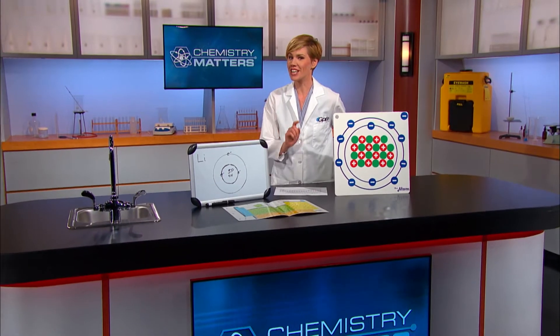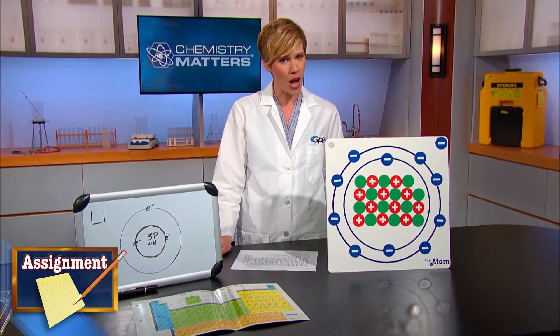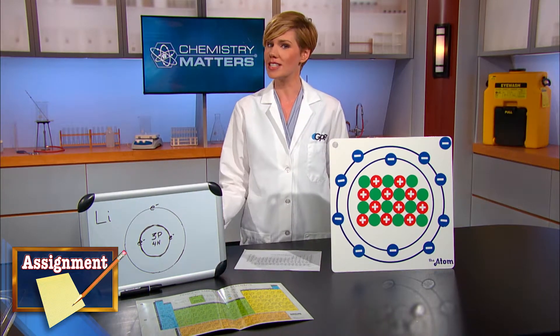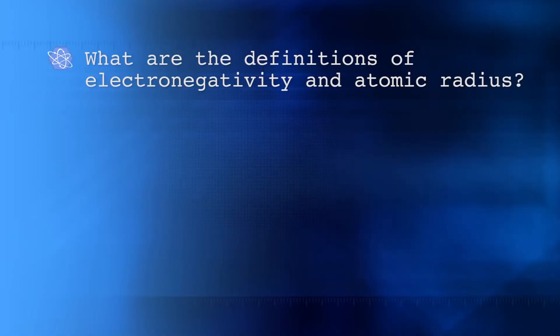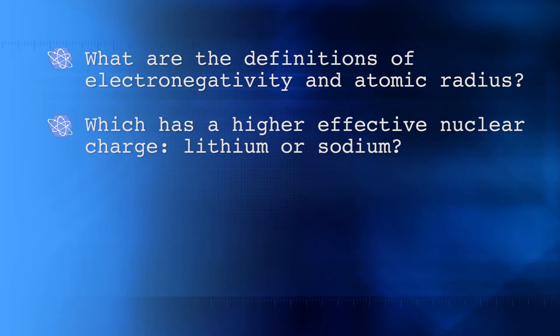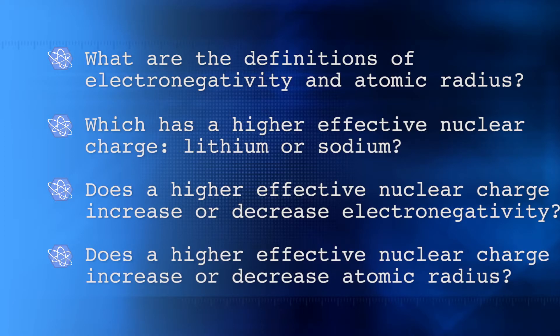Now's your chance to practice applying your new knowledge. Use the Bohr models of lithium and sodium and what you've learned about effective nuclear charge to predict whether electronegativity and atomic radius increase or decrease when moving from top to bottom down a group on the periodic table. The following questions should help guide your predictions: What are the definitions of electronegativity and atomic radius? Which has a higher effective nuclear charge, lithium or sodium? Does a higher effective nuclear charge increase or decrease electronegativity? And does a higher effective nuclear charge increase or decrease atomic radius? If you need help, review our discussion while determining the trend for ionization energy — the thought process will be the same. We'll explore trends across a period later on; for right now, focus on the vertical trends. We'll see you at the top of the next video on the playlist when you've finished your predictions.